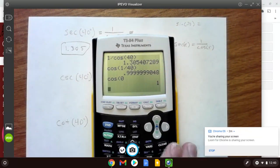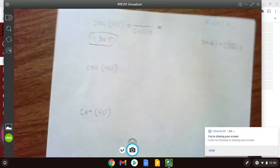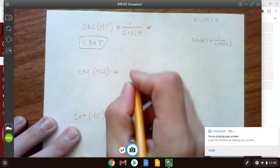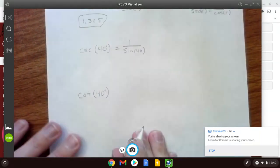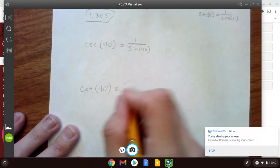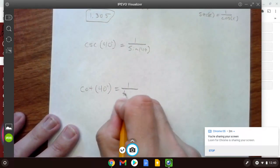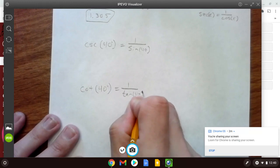For cosecant we're going to do 1 over sine of 40, and for cotangent we're going to do 1 over tangent of 40.